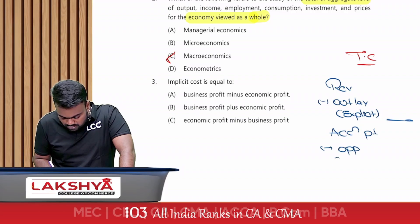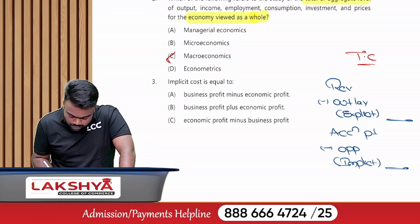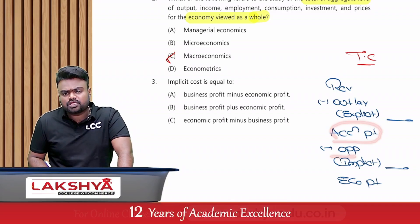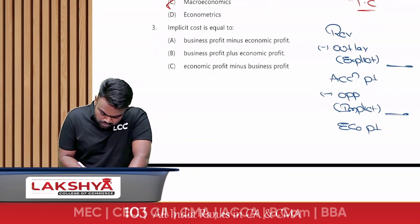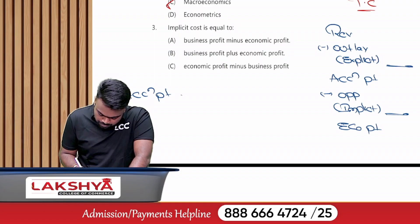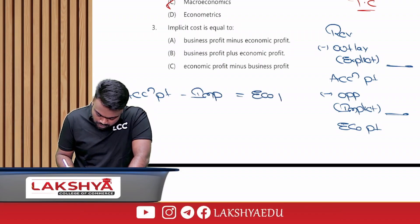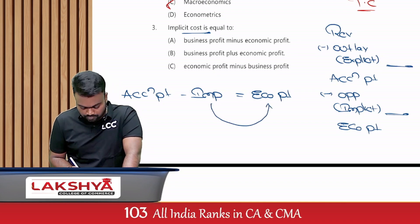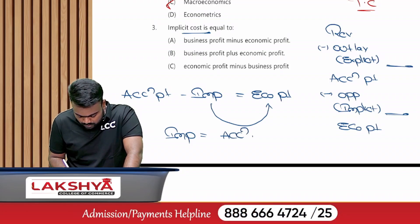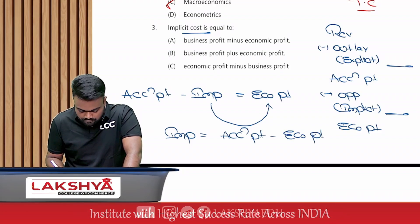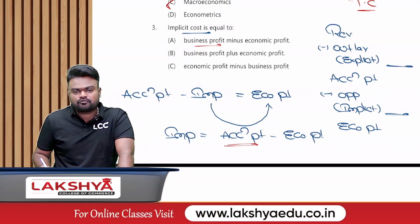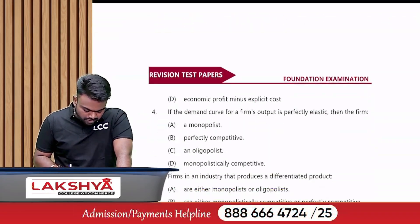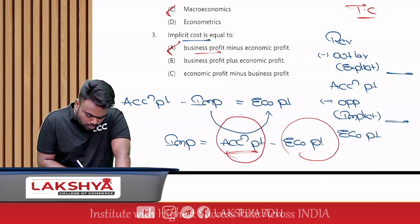Accounting profit minus opportunity cost, which is also called implicit cost, gives us economic profit. So: accounting profit minus implicit cost = economic profit. Rearranging, implicit cost = accounting profit minus economic profit. Since accounting profit is also called business profit, the correct answer is business profit minus economic profit, which is option A. The key given was option D, but that is wrong.